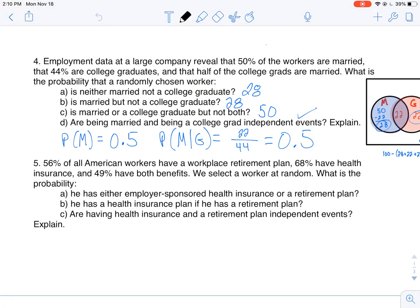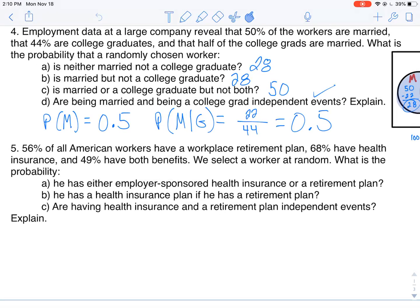Alright, I'm gonna be rocking another probability problem. Let's see, 56% of all American workers have a workplace retirement plan, 68% have health insurance, and 49% have both. We're gonna select a worker at random and we want to find the probabilities.